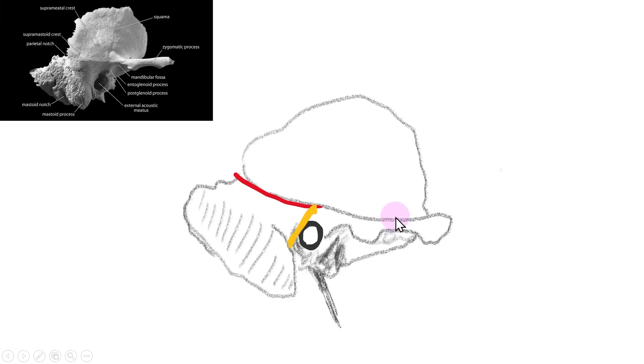The second border is the posterior superior margin of the external auditory meatus, and the third border is the tangent to the posterior border of the external auditory meatus. The second and third borders are very close to the external auditory meatus.